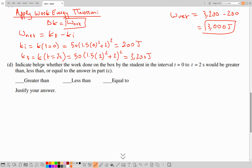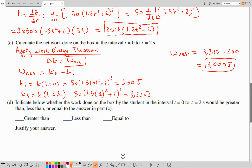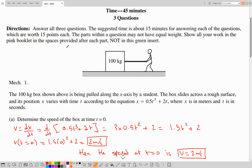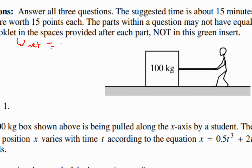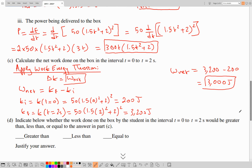In part D, we must indicate whether the work done on the box by the student over t equals 0 to 2 seconds is greater than, less than, or equal to the answer in part C (3000 J). The net work in part C is the work done by all forces: gravity, normal, friction, and the student. Gravity and normal do zero work. Friction is negative since it opposes motion. So the work done by the student must be greater than the net work.